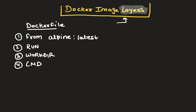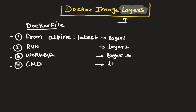Now when you are going to build this image, how does Docker build the image? Every instruction in your Dockerfile is treated as a layer when Docker builds the image. Docker reads it line by line — line one, then line two, line three, and line four — and it starts creating the layers internally. Going sequentially, it will create layer one for the first instruction, then layer two for the second, layer three for the third, and layer four for the last instruction.